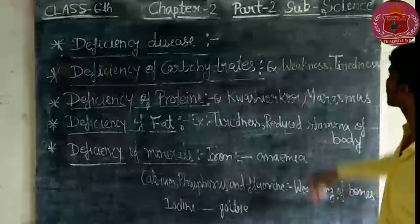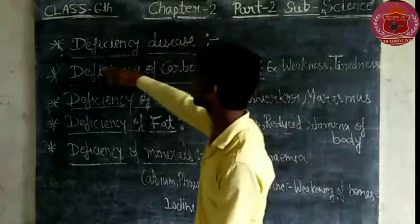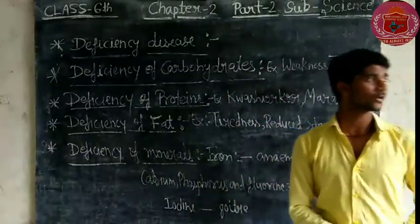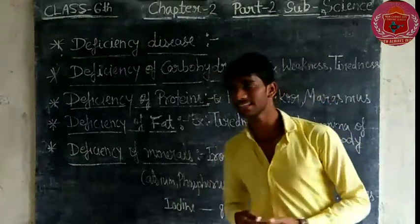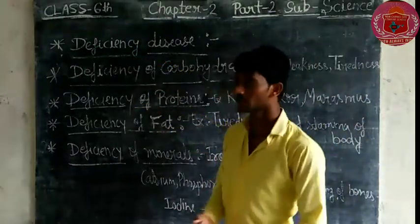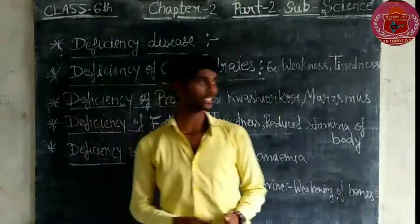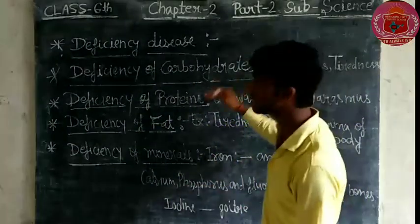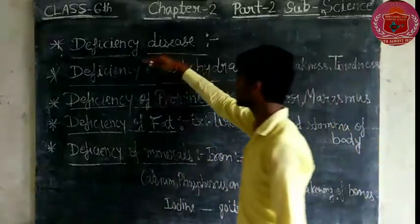Hello students. Today I am going to teach you Science Chapter 2, Part 2 — Deficiency Diseases. This is the first heading. A deficiency disease occurs when a nutrient that we need from our diet is lacking in the body. If diseases arise from such a lack, we call them deficiency diseases.